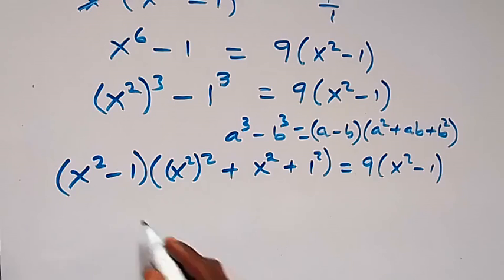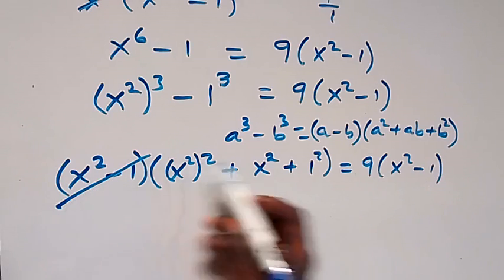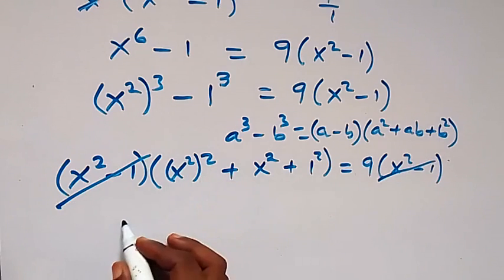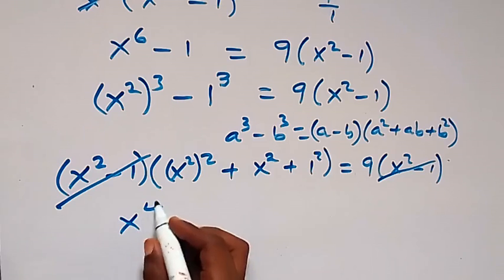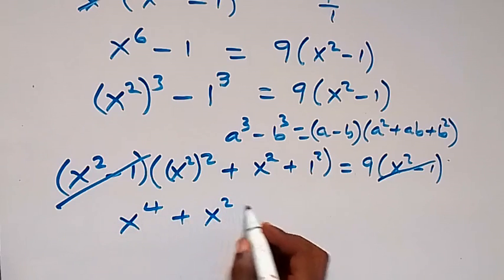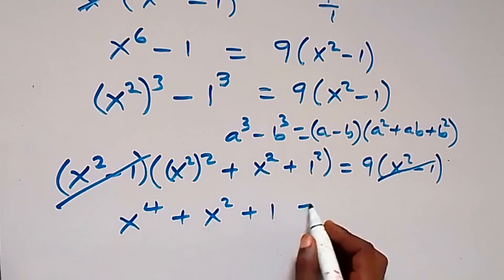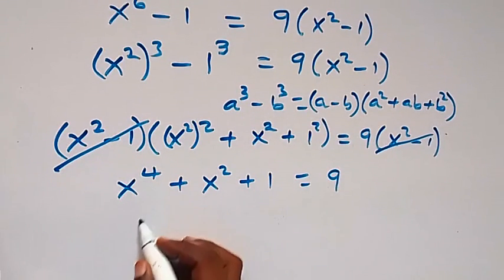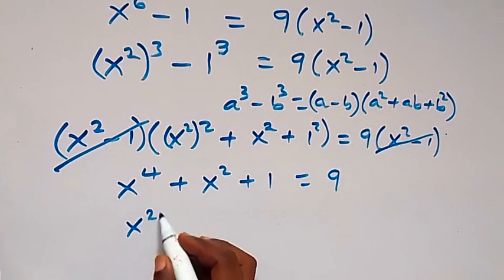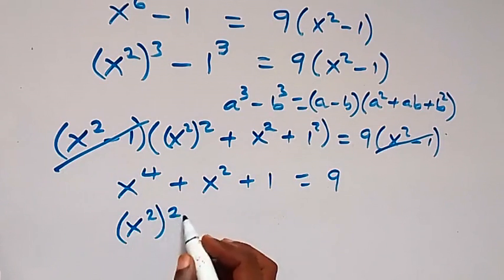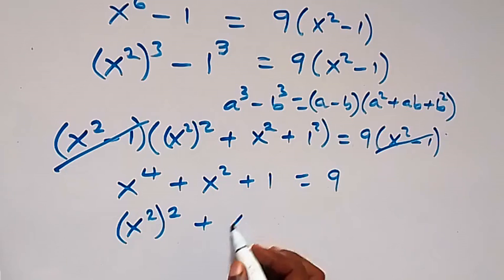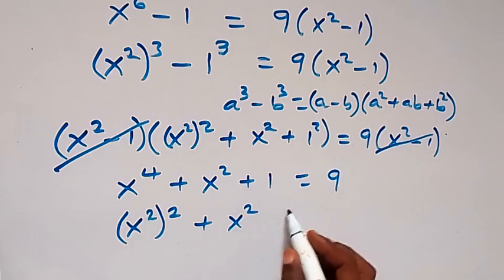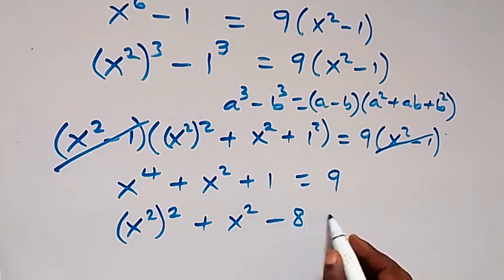We have x squared minus 1 on both sides and these cancel out. What we have left is x raised to power 4 plus x squared plus 1 equals 9. We can rewrite this as x to the power 4 plus x squared, then bring 9 to this side: plus 1 minus 9 gives minus 8, equals 0.